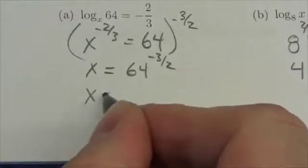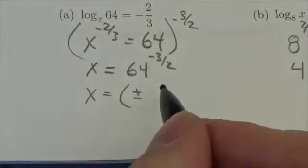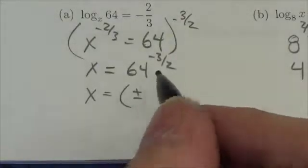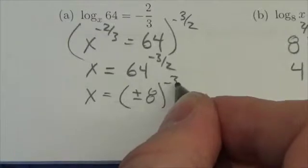So now we're going to end up taking a square root. So that's going to be plus or minus the square root of 64. And the square root of 64 is 8, so plus or minus 8 to the negative three.